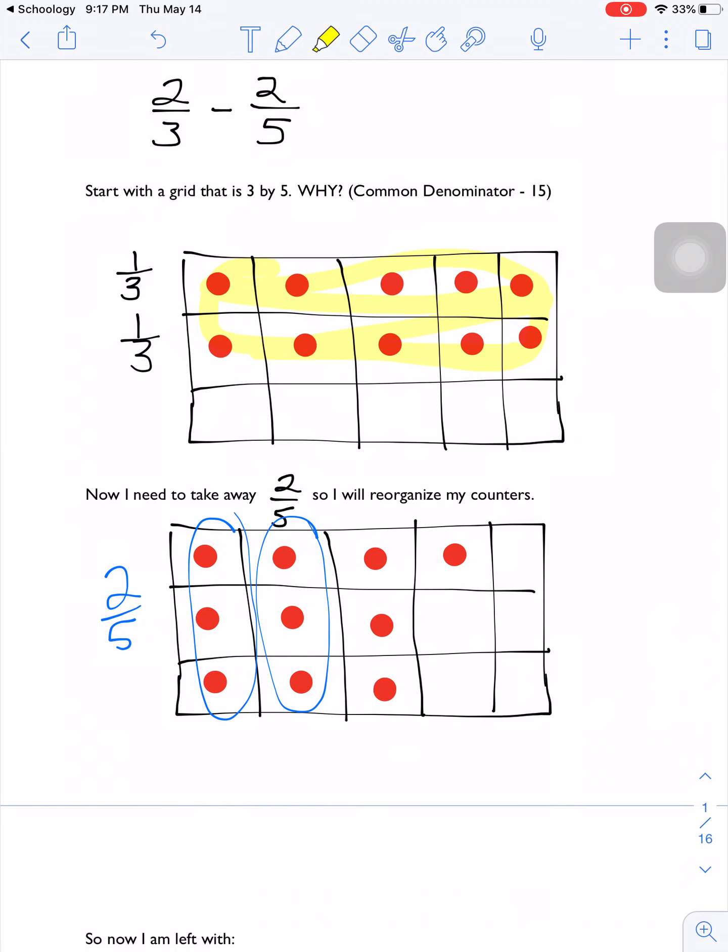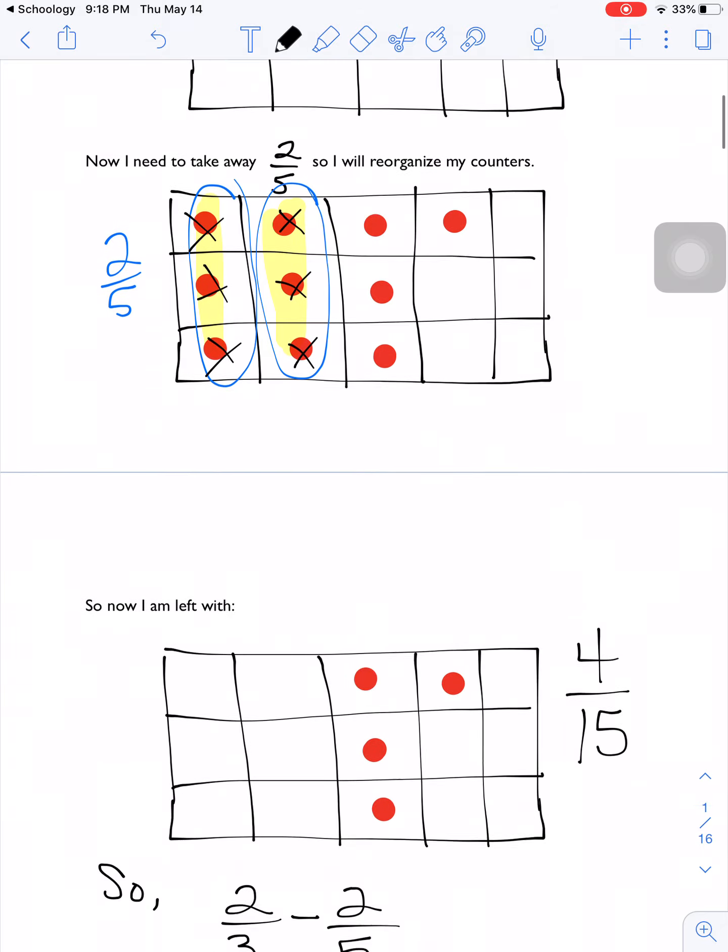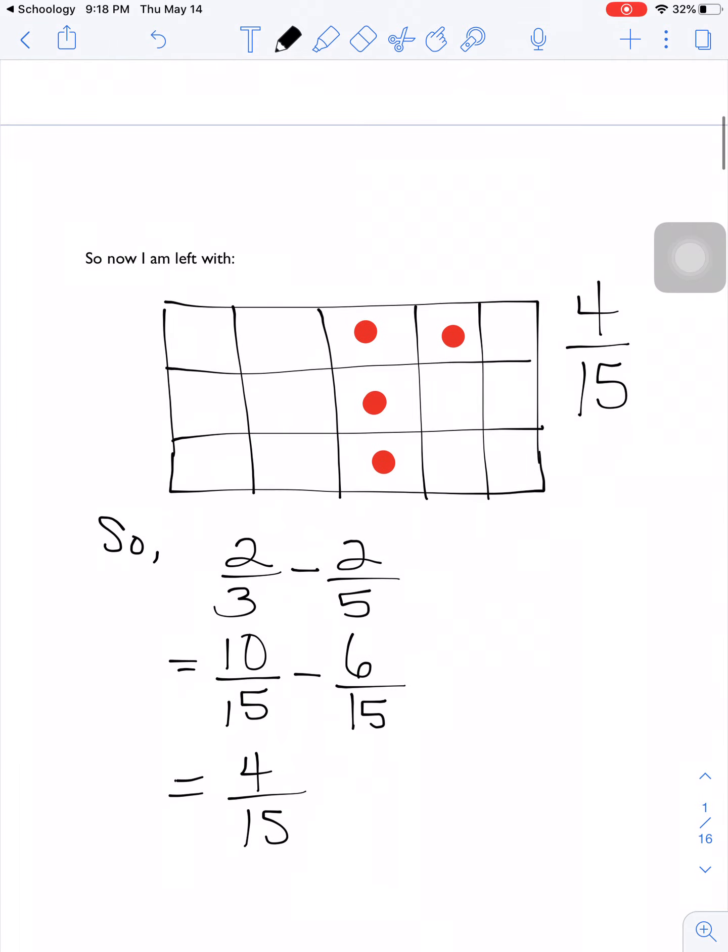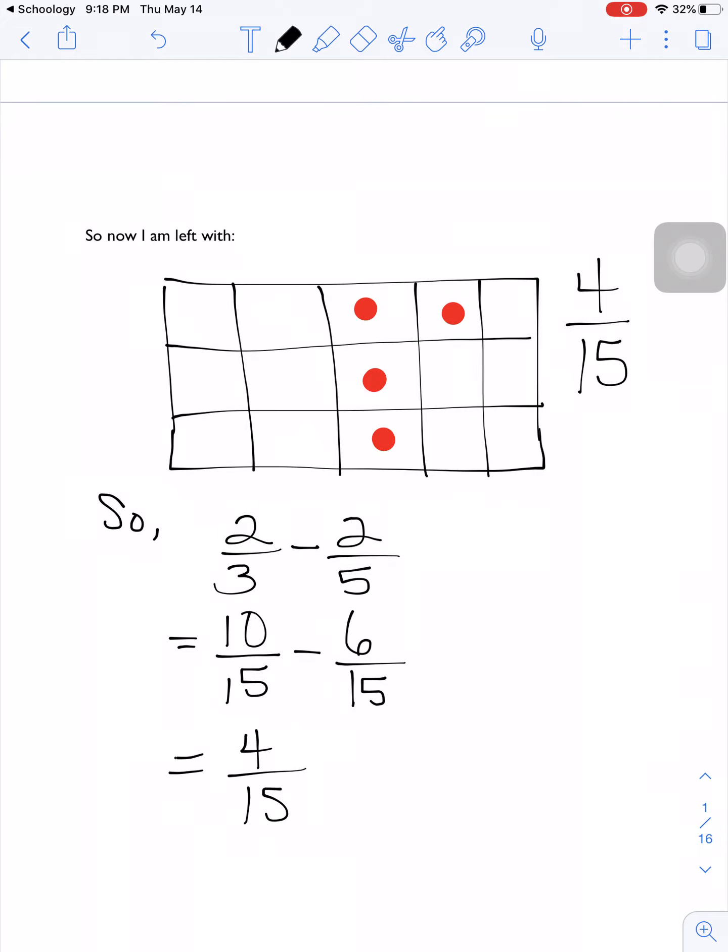In the next section, I figured out that 2/5 would be 2 columns out of the 5. So these cancel out because we're subtracting, and we are left with 4/15 left over. If we show that with equivalent fractions and finding common denominators, that would be 10/15 minus 6/15, which is equal to 4/15.